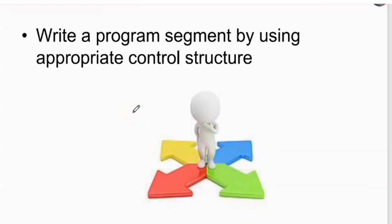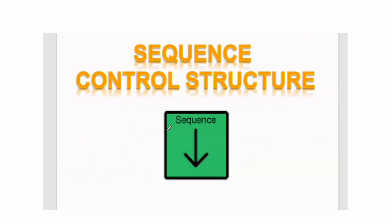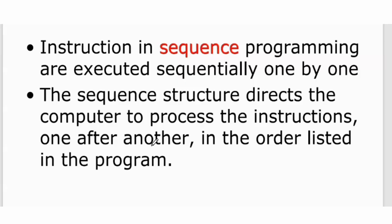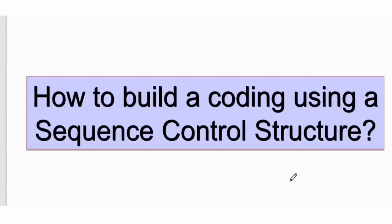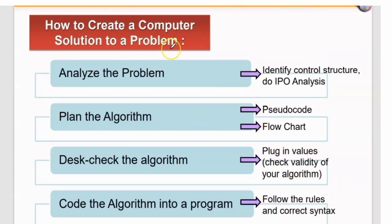Today we will discuss how to write a program segment using appropriate control structures. First, let's review sequence control structure. In sequence programming, instructions are executed sequentially, one by one. The sequence structure directs the computer to process instructions one after another in the order listed in the program.